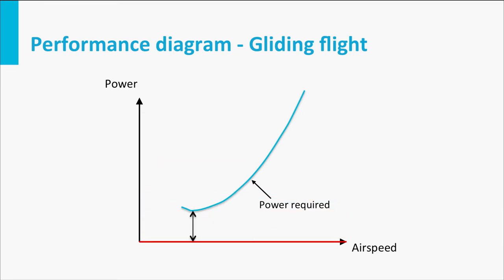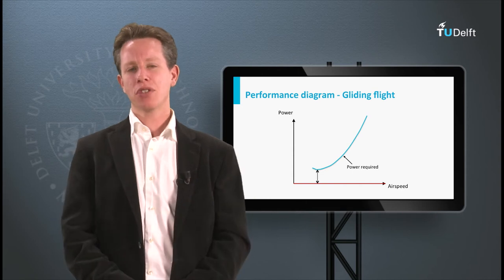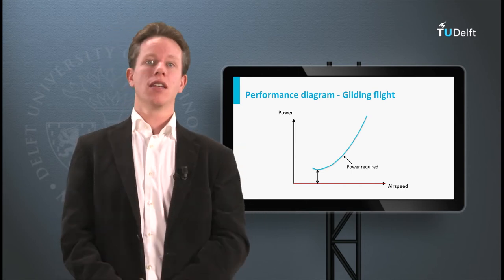Power available minus power required will again be maximum in the minimum power required condition. In fact it is a negative value now, but at all other flight speeds it is even more negative. So what does this actually mean? If we have zero thrust, the aircraft will be performing a gliding flight, it is descending.